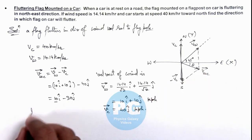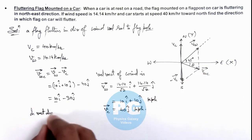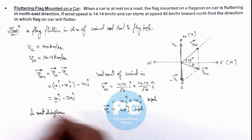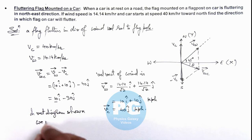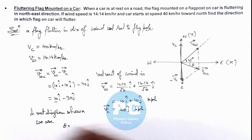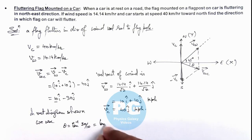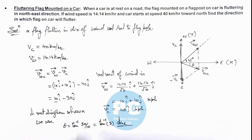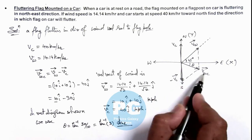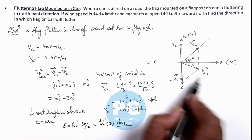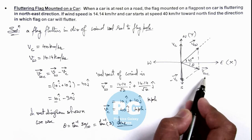From the vector diagram, the angle theta can be directly obtained as theta equals tan⁻¹ of 30 divided by 10, which is equal to tan⁻¹(3). That is the final result of the problem — the direction in which the flag will flutter, which is the direction of velocity of wind with respect to the car.